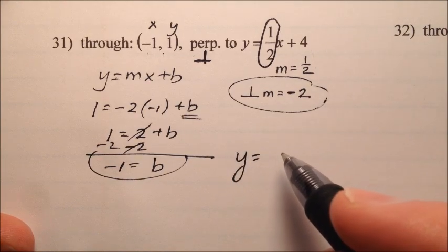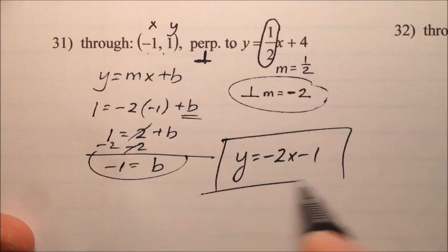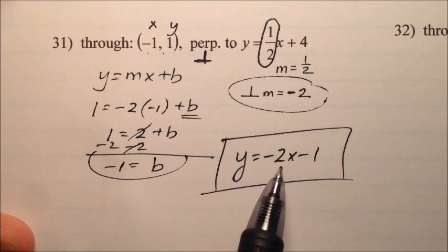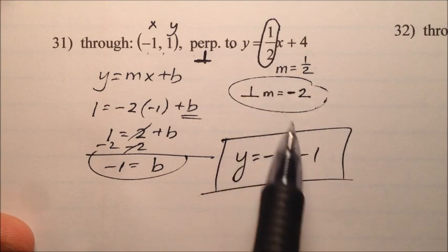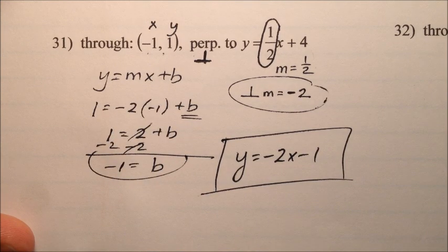So with my new slope and my new y-intercept, I can write the equation of my perpendicular line, negative 2x minus 1. So this line is perpendicular to this line, and this new line passes through this point, negative 1, 1. So the solution for number 31 is the line with the equation y equals negative 2x minus 1.